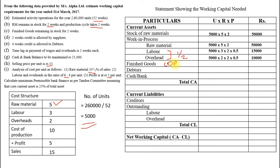Debtors are always on selling price unless mentioned otherwise. Selling price is 15, and debtors period is 4 weeks, so 5,000 × 15 × 4 = 3,00,000. Cash is already given as 25,000. When you add up all current assets, the total comes to 5,50,000 rupees.